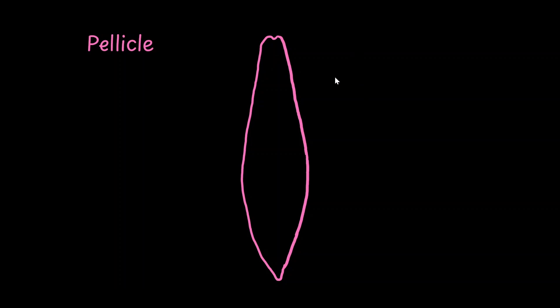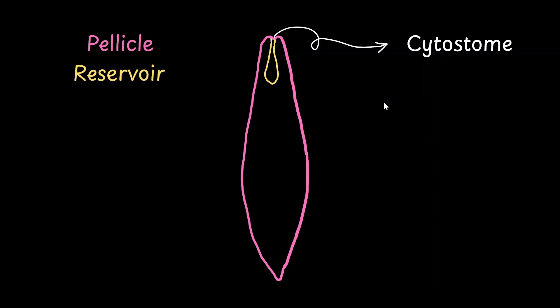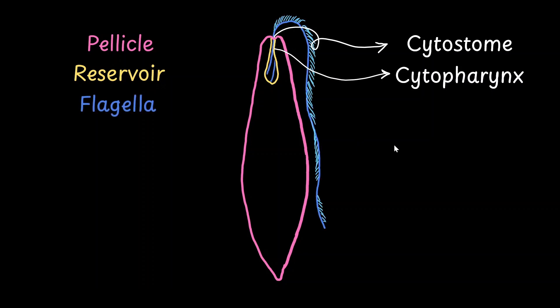Euglena does not have a cell wall. Instead, it has a proteinaceous coat called the pellicle. At the anterior end of the organism, there is an opening called the cytostome, which is similar to our mouth. This leads to a sac-like structure called the reservoir, and the tube leading to the sac is called the cytopharynx. The reservoir holds both flagella of the organism — one long and one short — and they arise from their own basal granule or kinetosome.